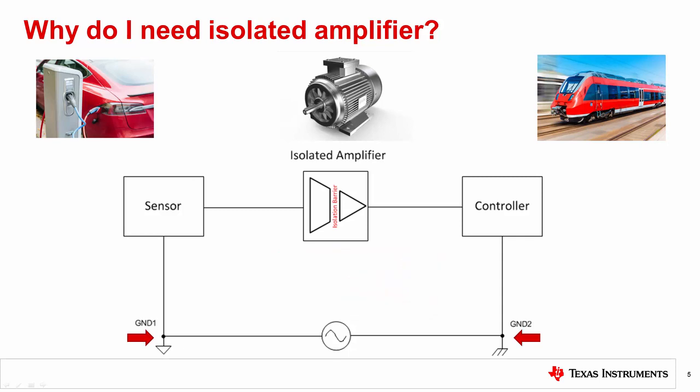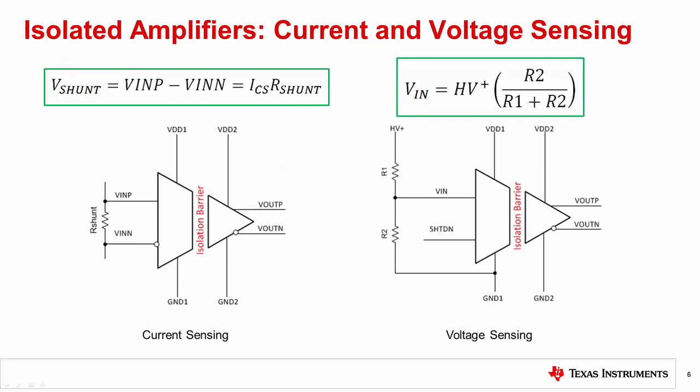A second reason for using an isolated amplifier is protection against high voltage. When industrial equipment is running at hundreds of volts, isolated amplifiers can safely withstand high voltage surges that can damage equipment or harm humans. Here are some common examples of applications for isolated amplifiers: current sensing and voltage sensing.